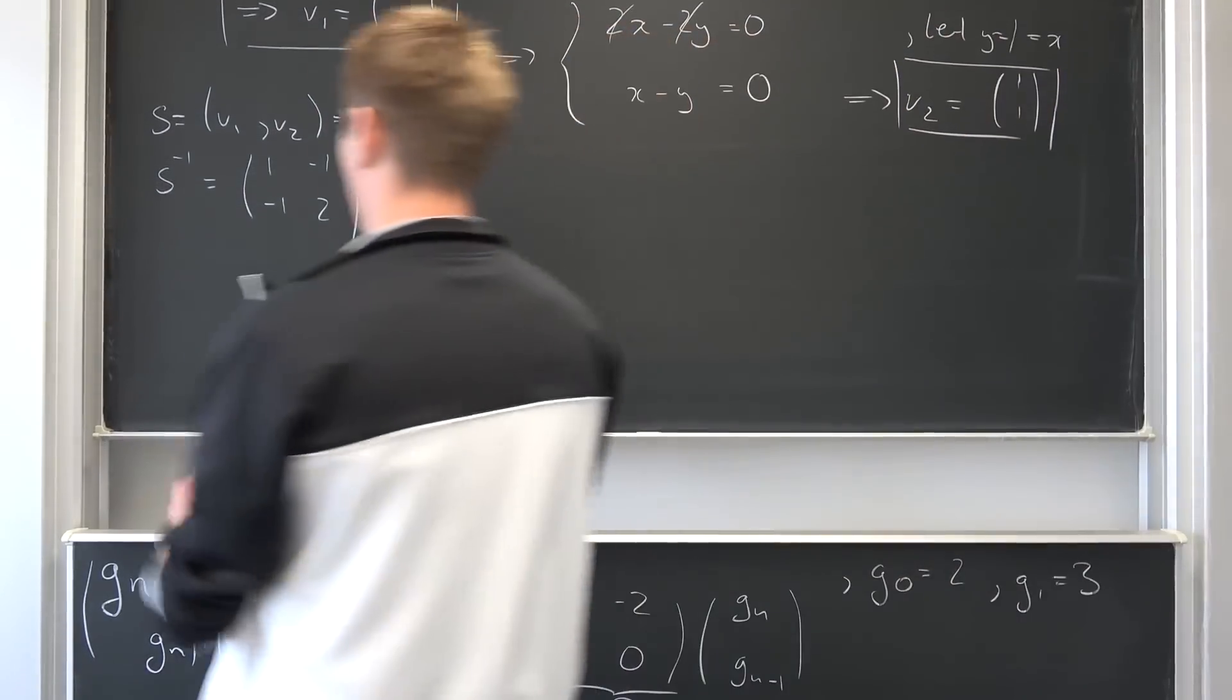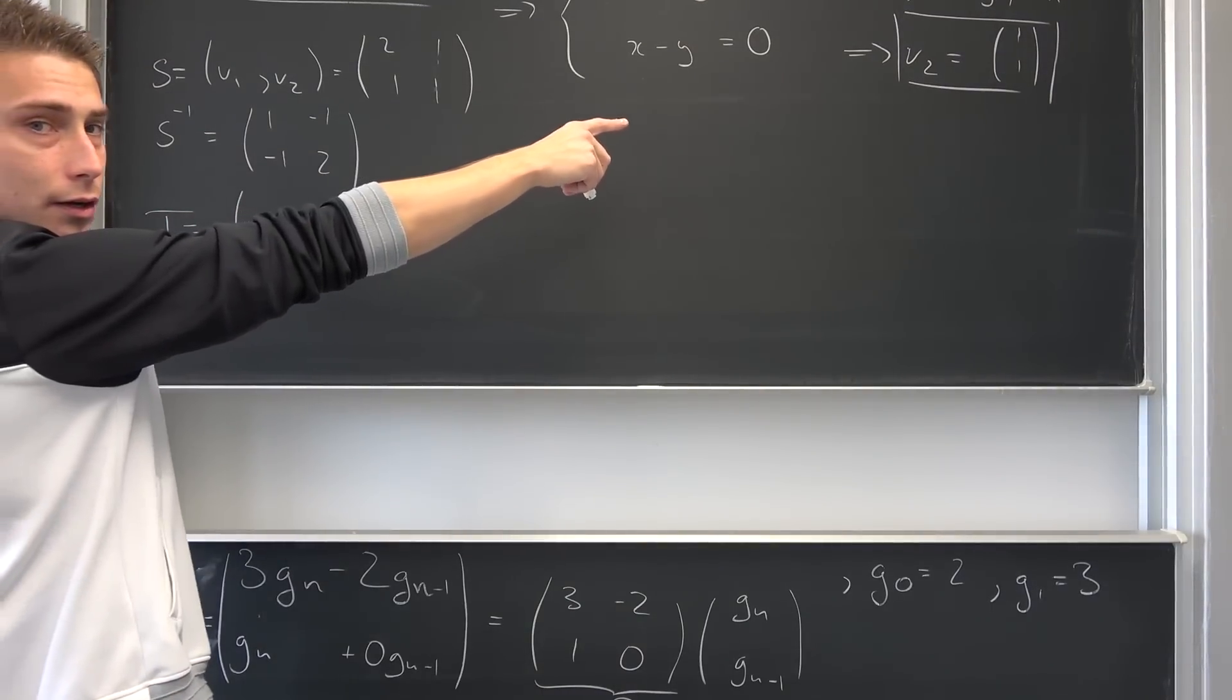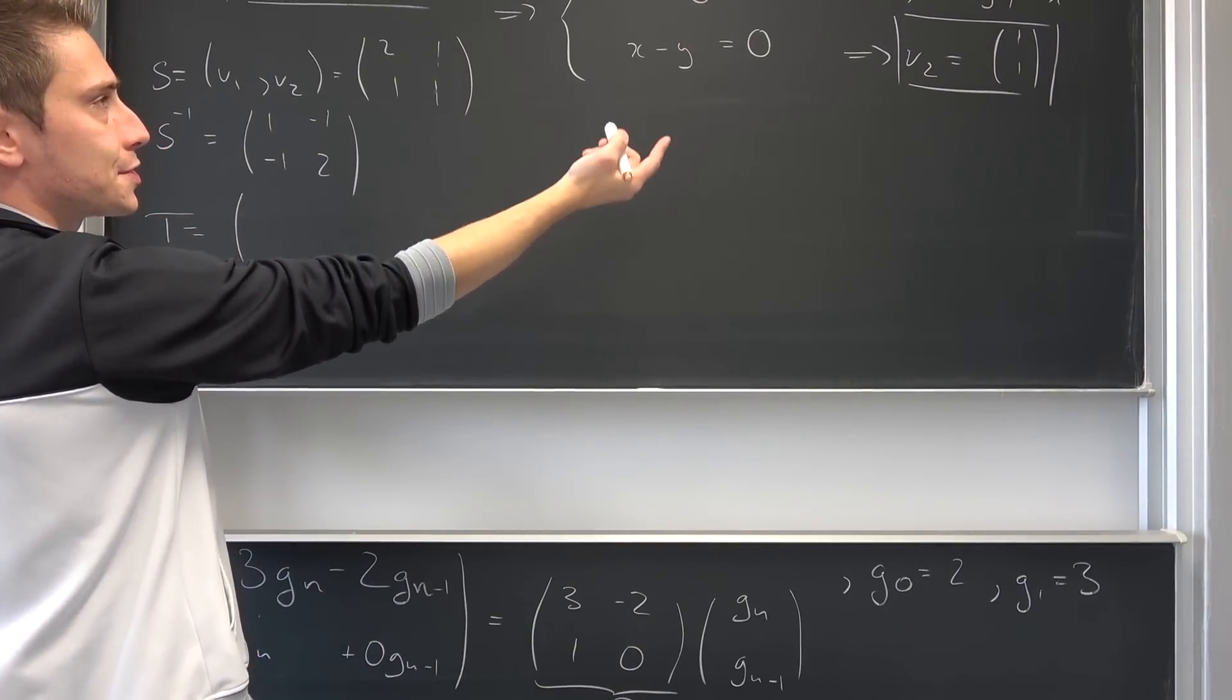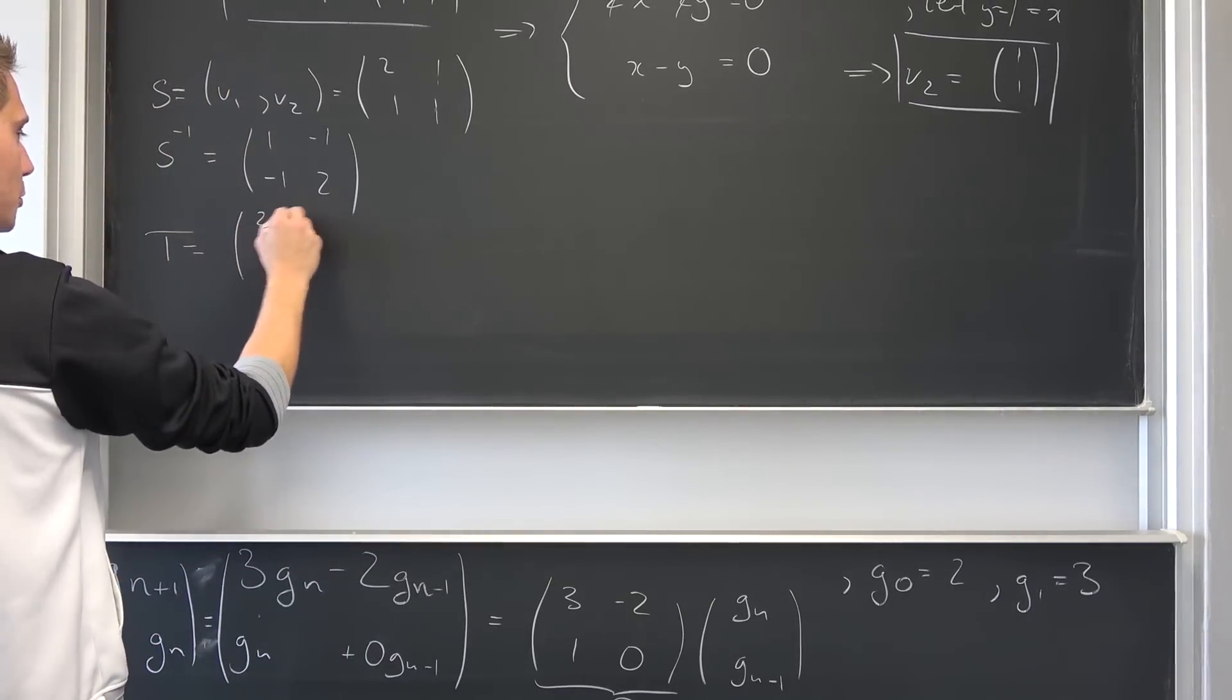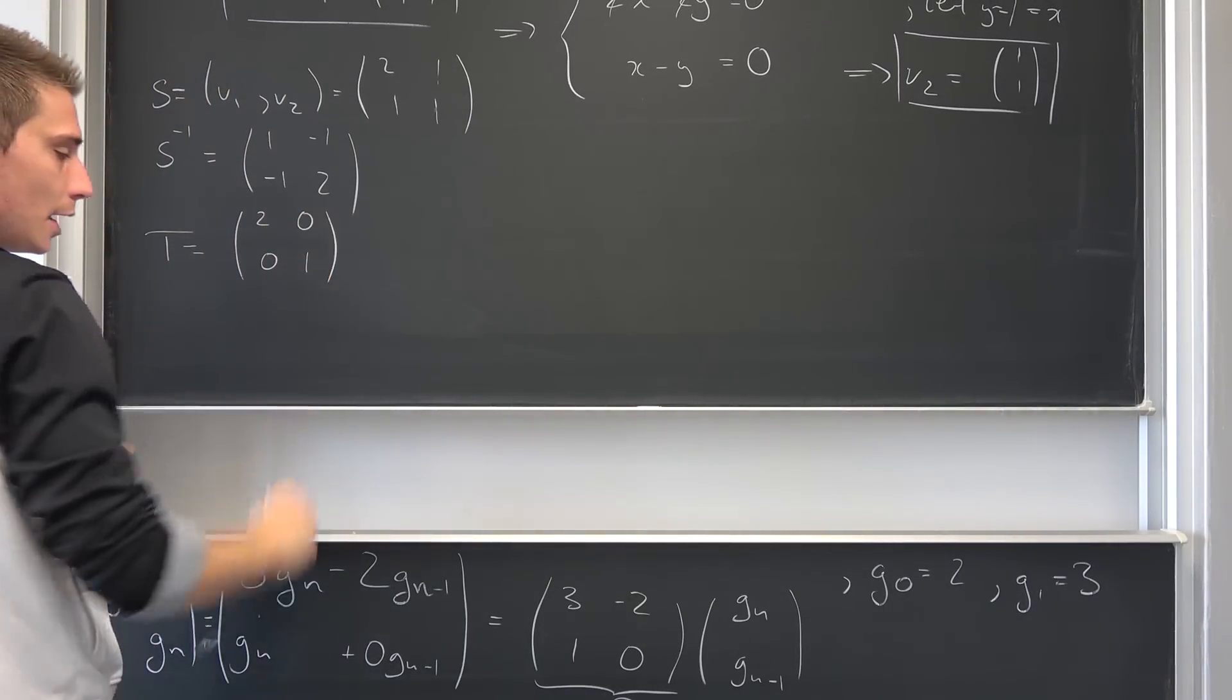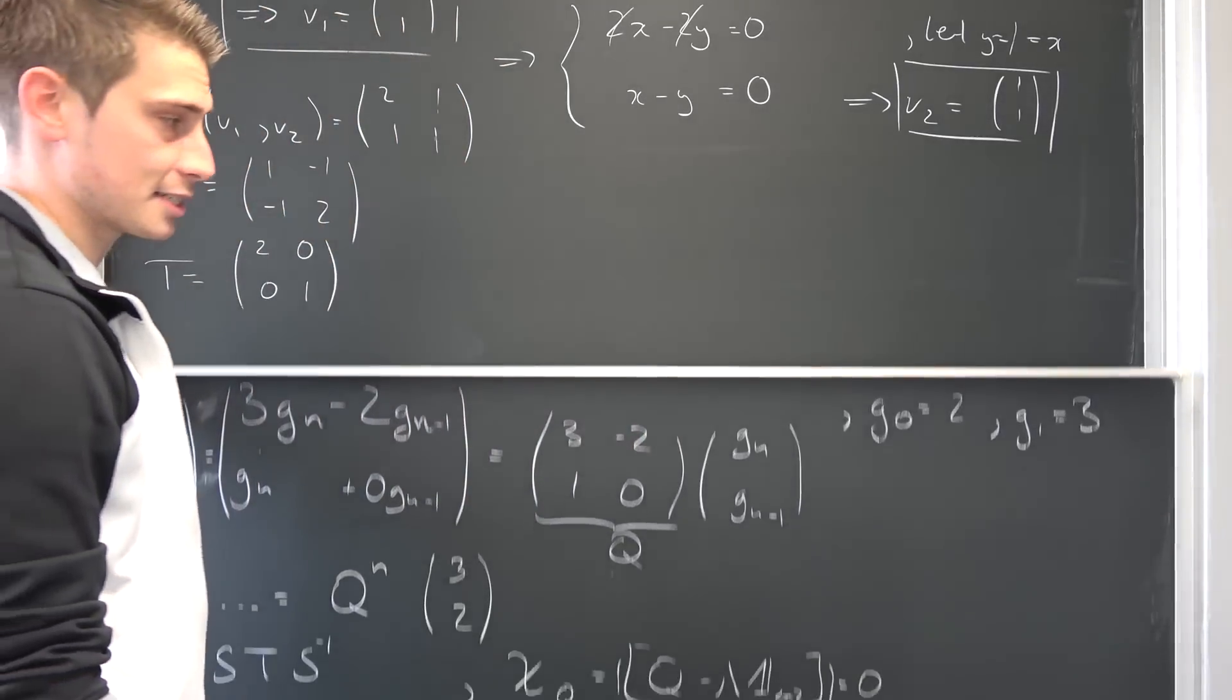Our T, like I said before, is just the matrix with our eigenvalues on the main diagonal. So this is 2, 0, 0, 1. Also, one thing that I want you guys to notice is, I have done this in the Fibonacci video, go take a look at that.